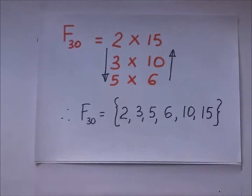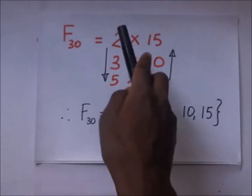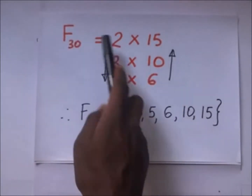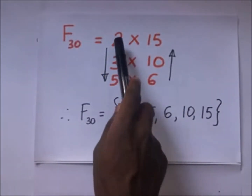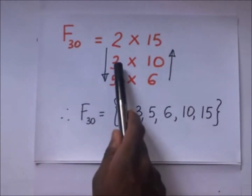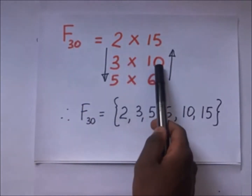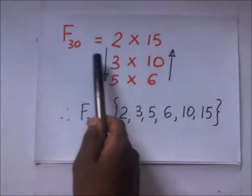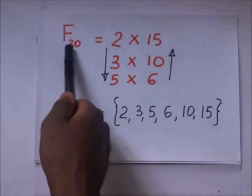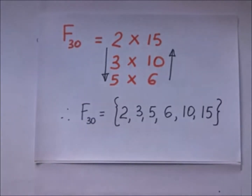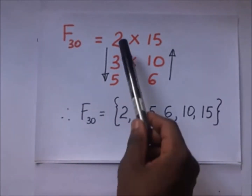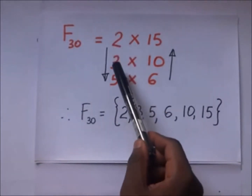For example, let's consider the number 30. If we ask ourselves what are the factors of 30, these are the numbers which when multiplied give you 30. For example, 2 times 15 is 30, 3 times 10 is 30, and 5 times 6 is also 30.